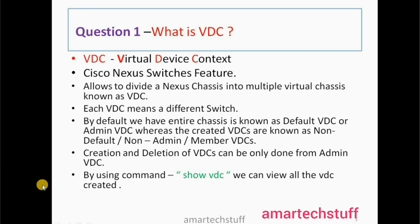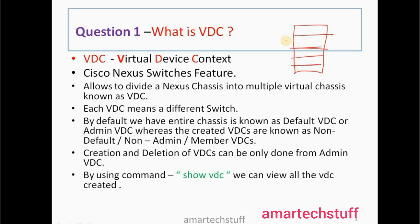Question number one: What is VDC? VDC stands for Virtual Device Context. Cisco Nexus switches have this feature of VDC, which allows a network administrator to divide a Nexus chassis into multiple virtual chassis. Those virtual chassis are known as VDCs. So if you have a Nexus switch with a number of modules, because of this VDC feature, a network administrator can divide the complete chassis into multiple virtual chassis.